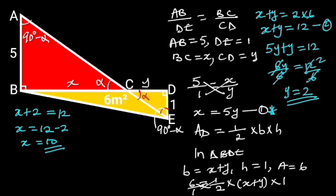Now we know the base of triangle ABC, let's go ahead and find the area. The area of triangle ABC is equal to 1 over 2 times 10 times 5. 10 divided by 2 is 5. So, we are left with 1 times 5 times 5, which is equal to 25. Hence, the area of triangle ABC is equal to 25 square meters.